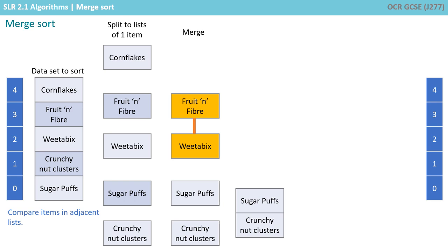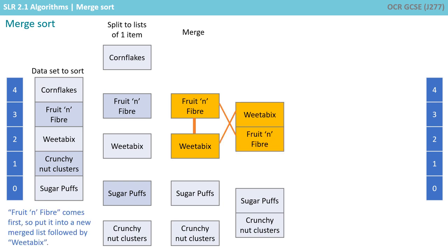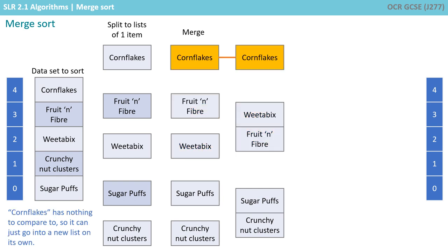We repeat the process and compare items in adjacent lists. Fruit and Fibre comes first, so we put it into a new merged list, followed by Weetabix. Cornflakes has nothing to compare to, so it can just go into a new list on its own.